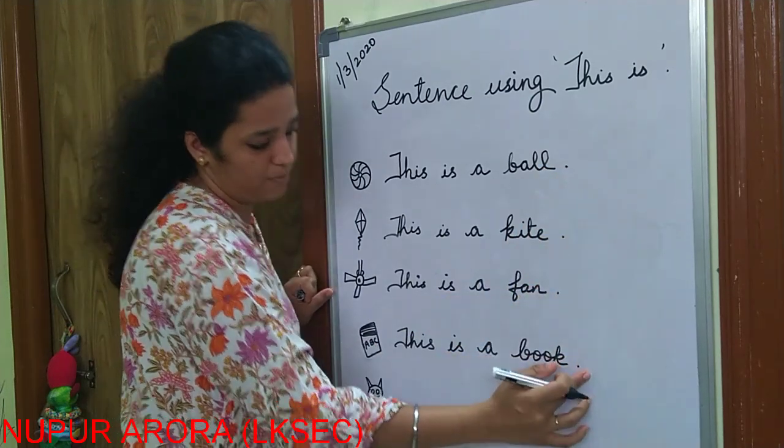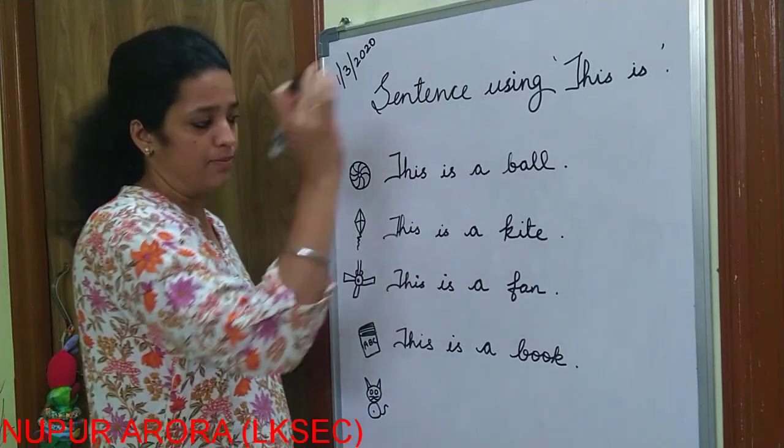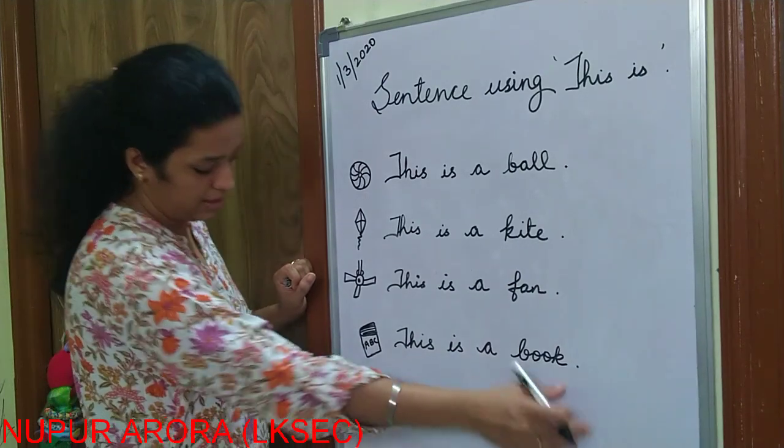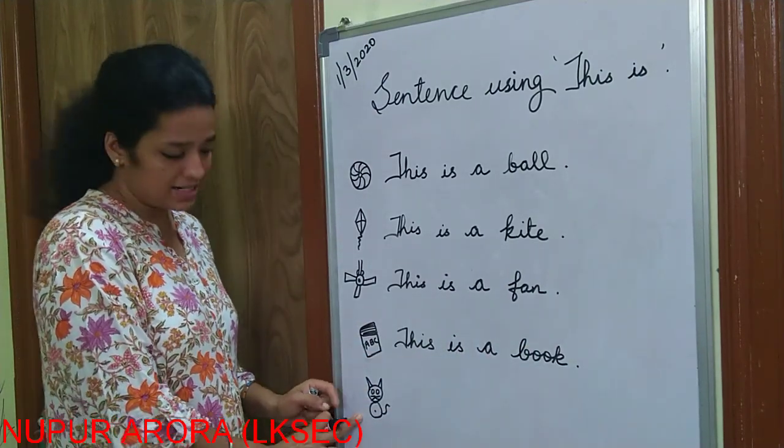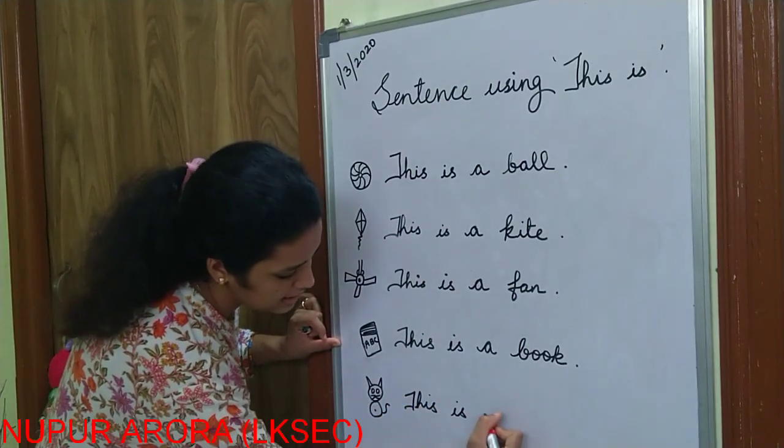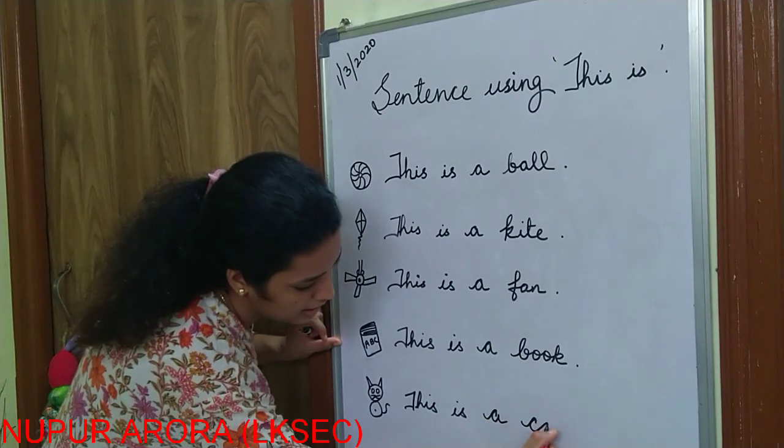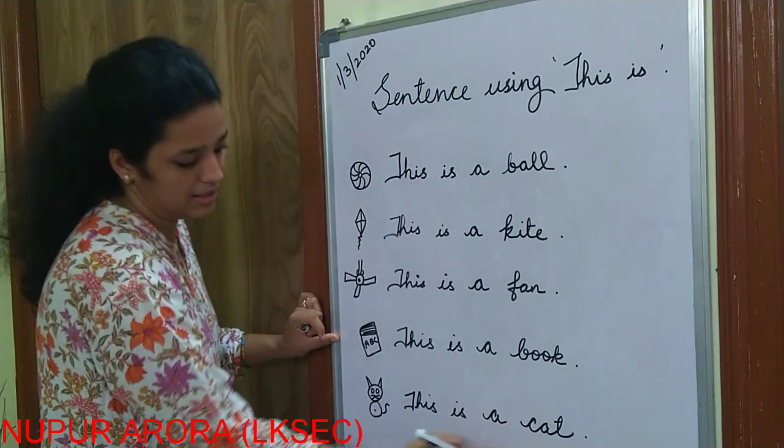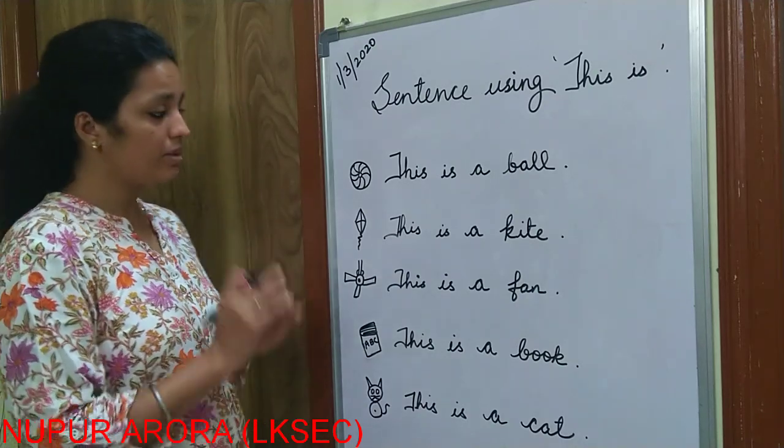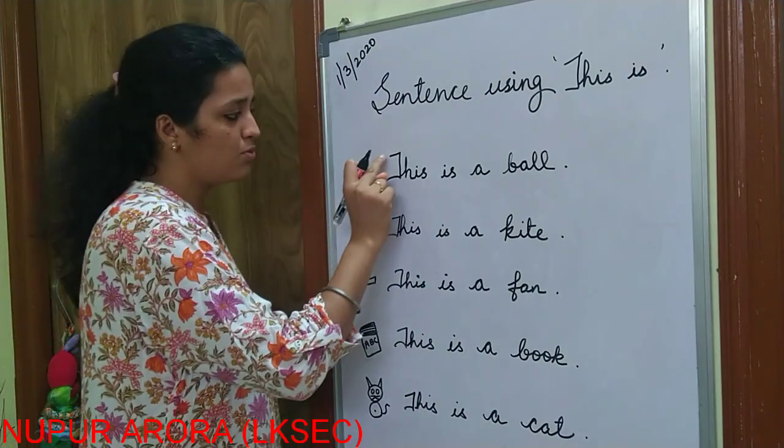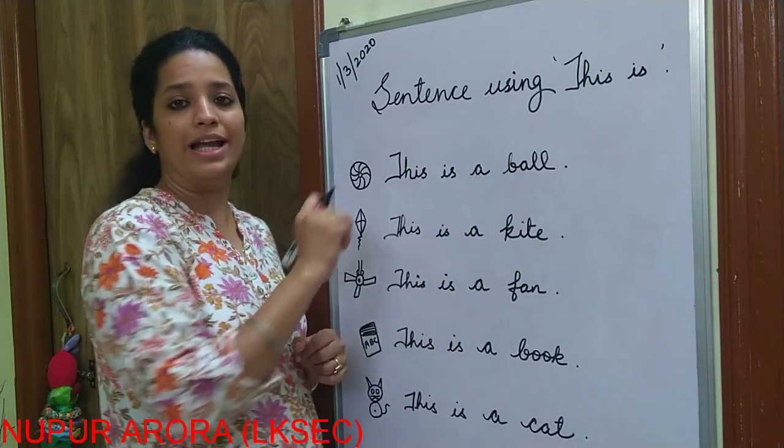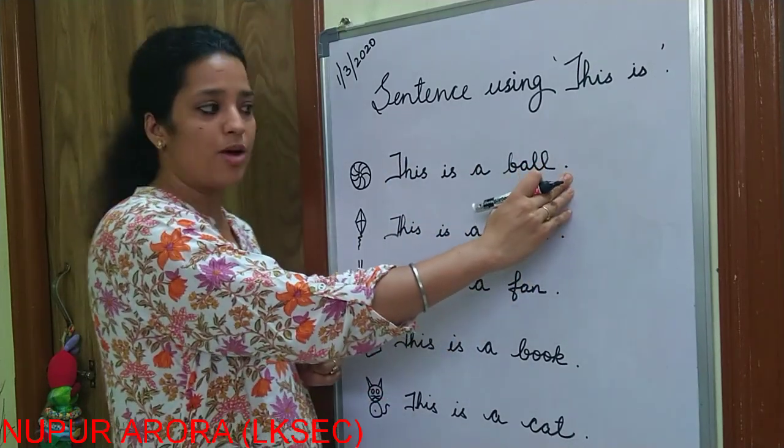See in every after every sentences I am using full stop, it means the sentence is over. This is a ball, this is a kite, this is a fan, this is a book. Now the last one is this is cat. So what you will write here is this, is A, cat, this is a cat. So here are some sentences using this. First thing you have to note, first कोई भी you will all small letters and it will end it with full stop, this is A.